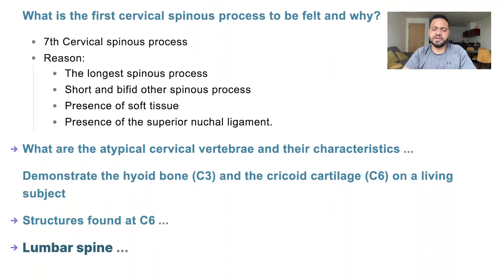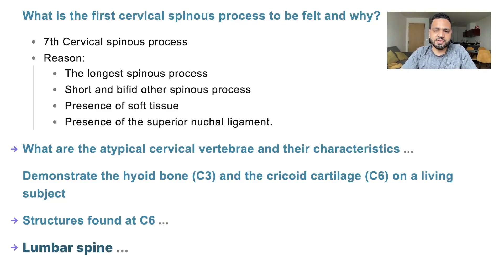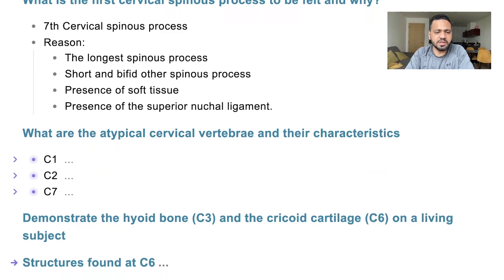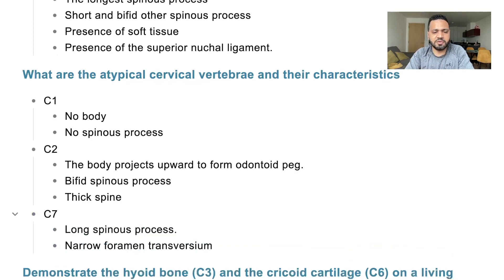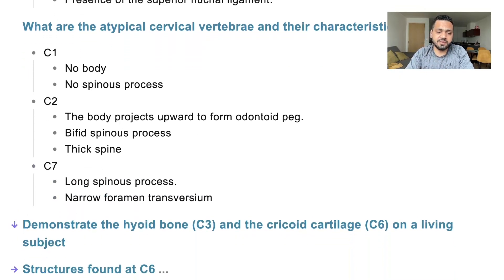The atypical cervical vertebrae: C1 has no body and no spinous process, only a very short tubercle. C2 — the body extends upward to form the odontoid peg; it also has a bifid spinous process and a thick spine. C7 has the longest spinous process, a very short transverse process, and absence of the transverse foramen, or foramen transversarium.